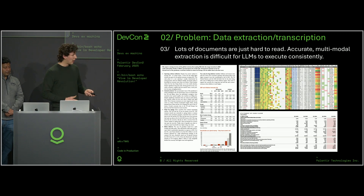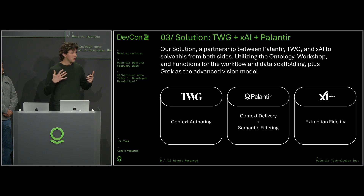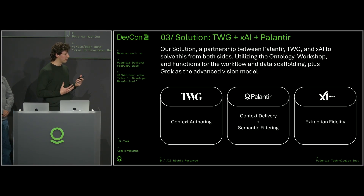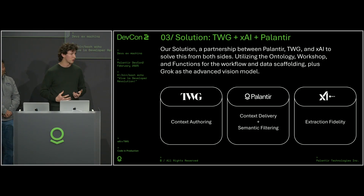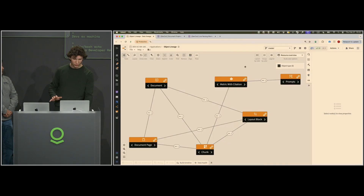Our approach to this is to combine the financial services expertise of TWG for the context, the ontology-driven data delivery system at Palantir to provide the right information, and the help of our partners at XAI to refine the models and really give us the optimal data extractions we're looking for. So let's switch to a quick demo of what we've been doing with our partners.